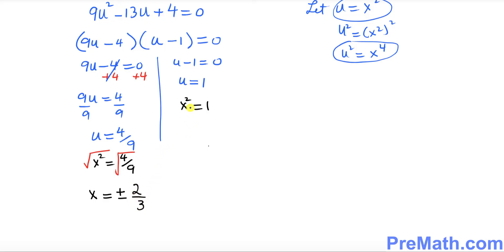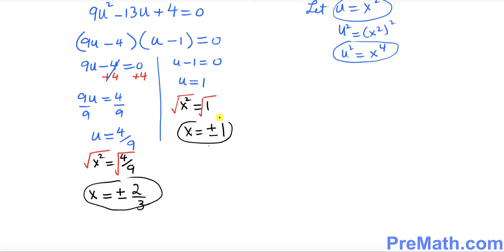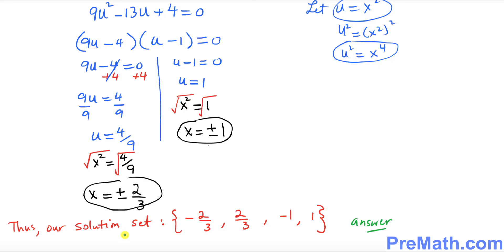Taking the square root on the other side as well, x equals positive or negative 1. So our complete solution set is: negative 2 thirds, positive 2 thirds, negative 1, and positive 1. Thanks for watching and please subscribe to my channel for more exciting videos.